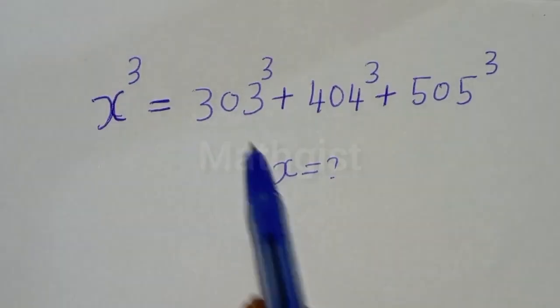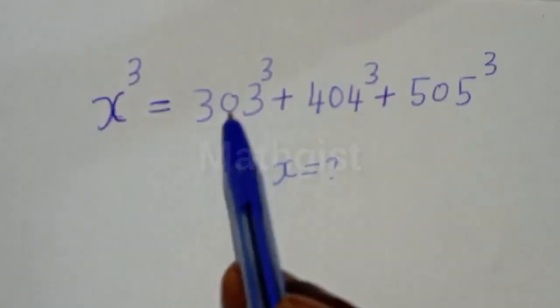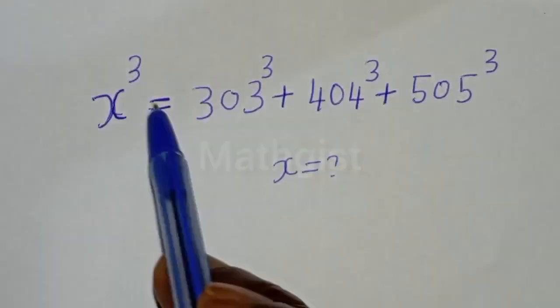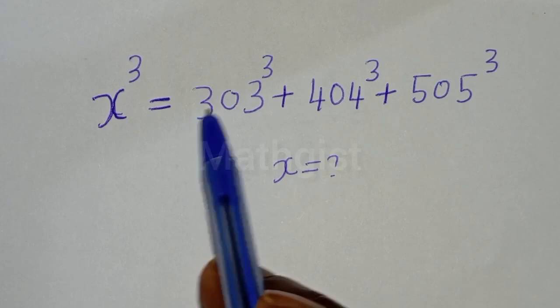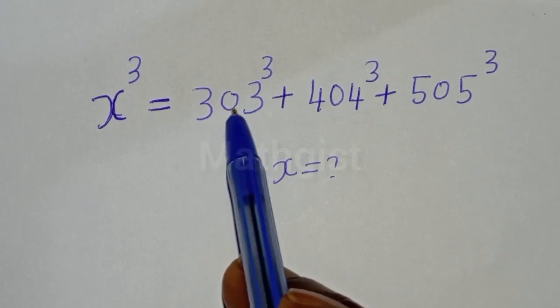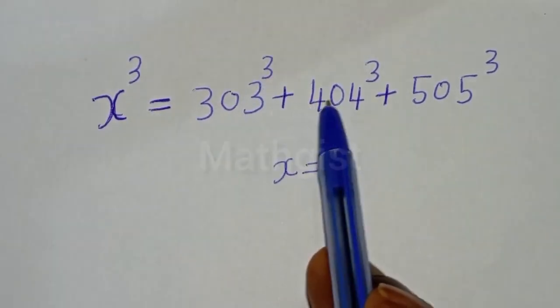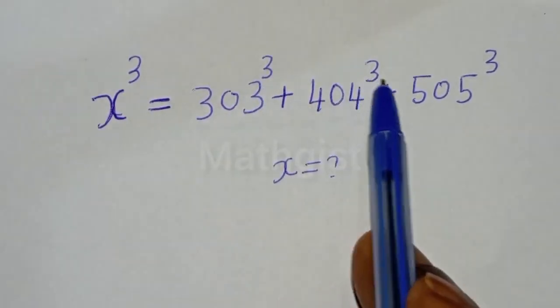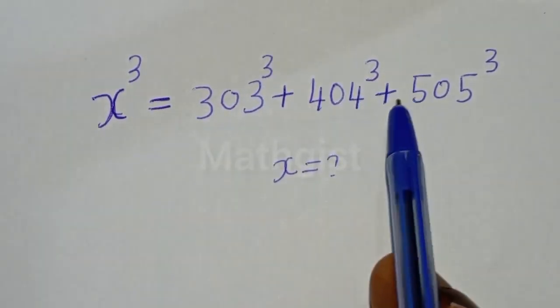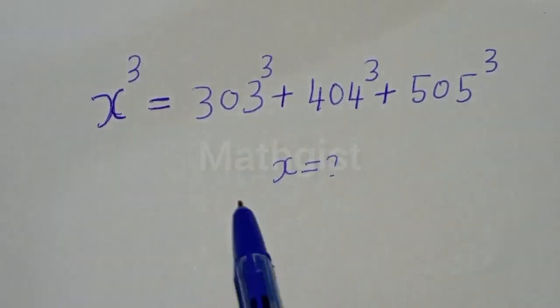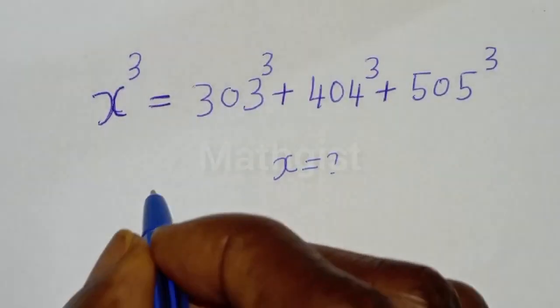Hello, we want to find the value of S from this given equation. S raised to the power 3 is equal to 303 to the power of 3 plus 404 to the power of 3 plus 505 to the power of 3.